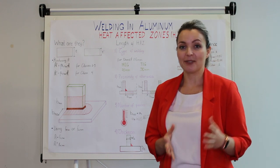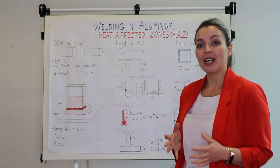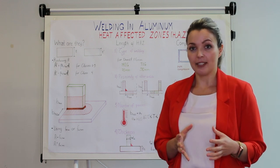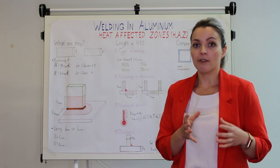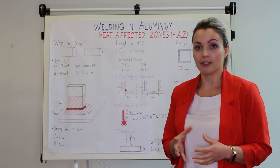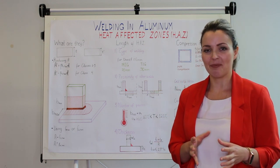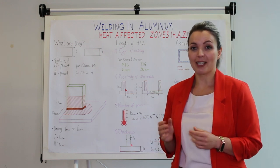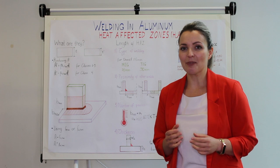Aluminium is a really interesting material. It is low in density, therefore it's quite lightweight, and its mechanical properties can be significantly increased after alloying from 90 MPa up to 500 MPa, reaching the properties of a really good quality steel. However, when we've got welds, all these mechanical properties are going away.